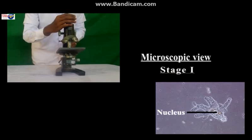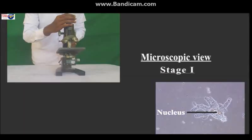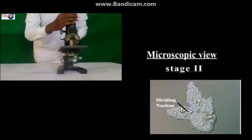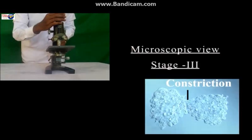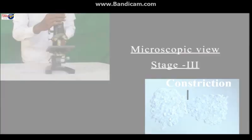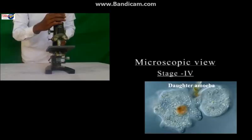In the second stage, amoeba shows nucleus division — that is, karyokinesis. In the third stage, we can see the cell body division — that is, cytokinesis. In the fourth stage, two daughter cells of amoeba are formed.